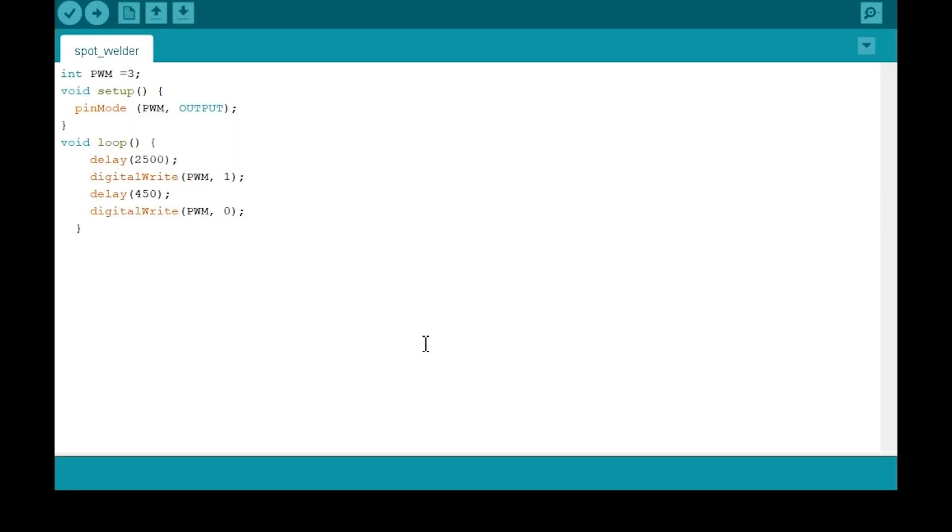Now let's have a look at the code in the Arduino IDE. Here you can select the digital output pin of the Arduino. By varying this number, you can vary the spot duration for different thicknesses of nickel strip.